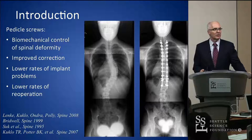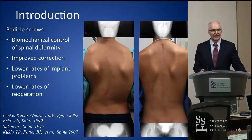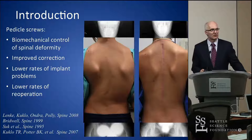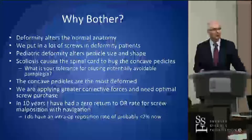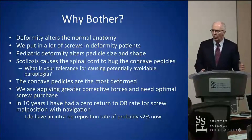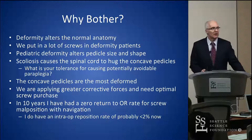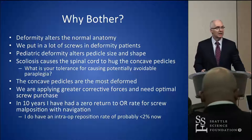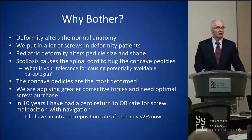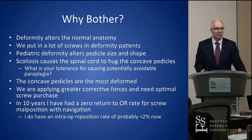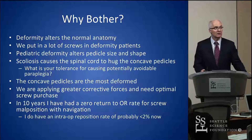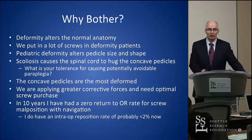In spine deformity, the expectation today is that we get excellent results, and there's data to support that screws do a better job and improve our ability to correct it. So why bother with navigation? In deformity, we have altered anatomy, a lot of screws to put in, and the tolerance is reduced — the spinal cord is right up against the pedicle. I don't think we have the Gertzbein 2-millimeter safe zone in some of those patients.